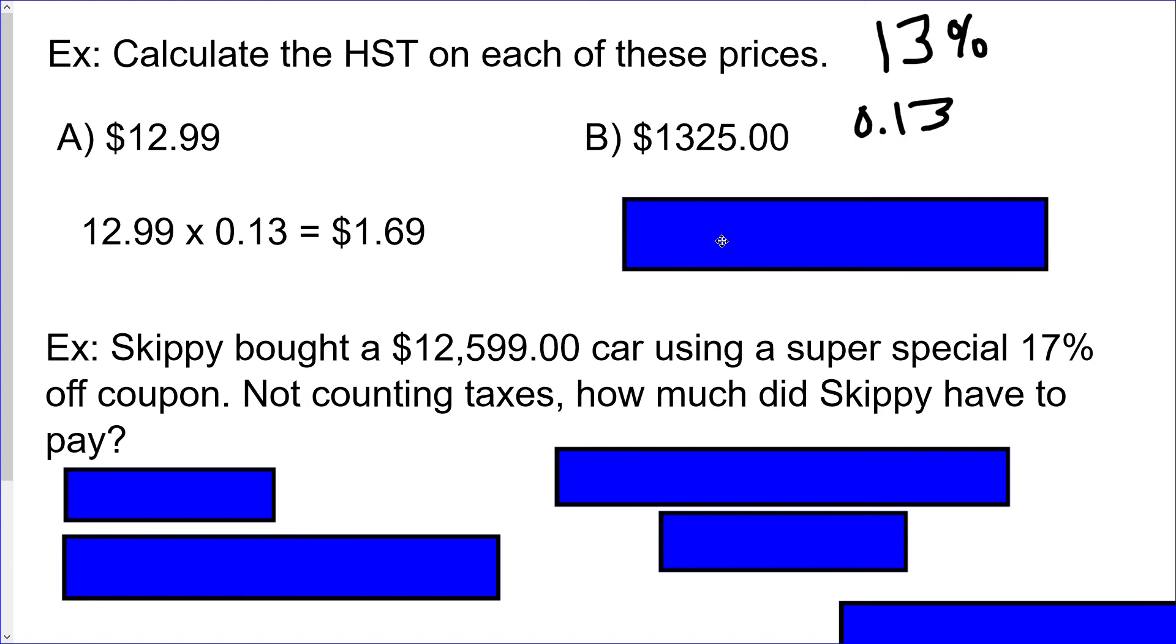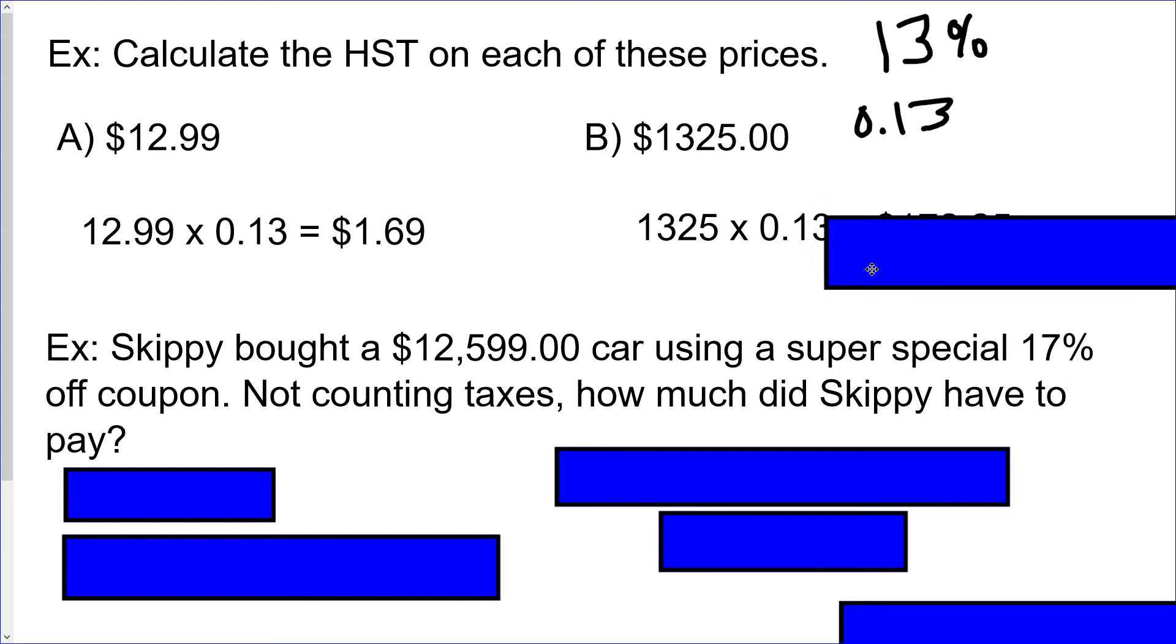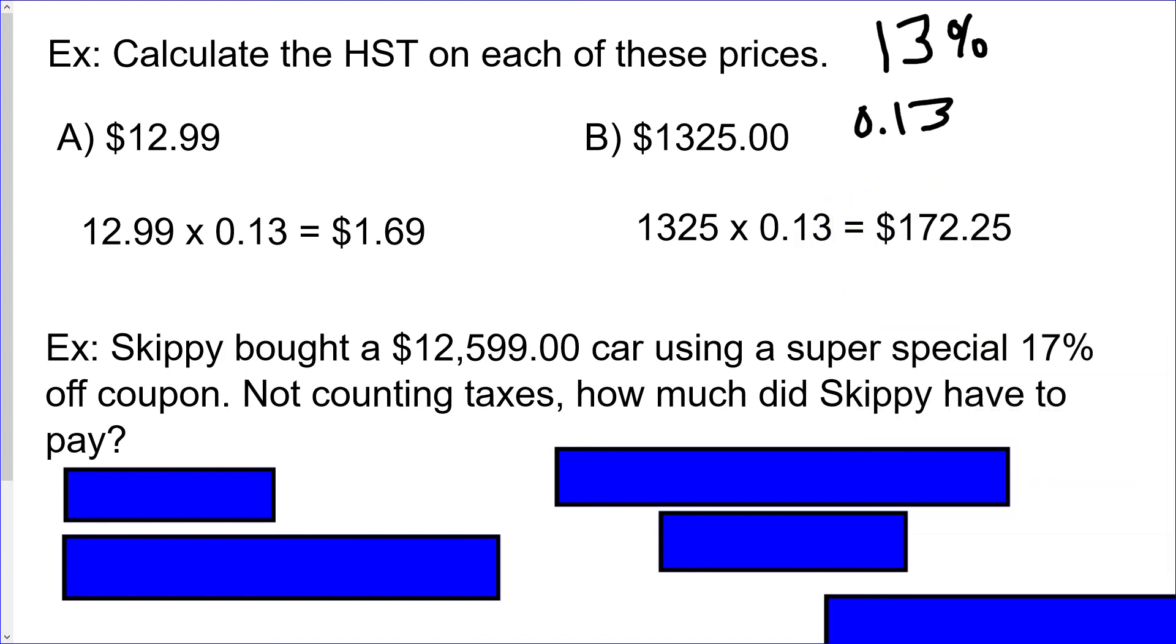Alright, so our first step again, so 1325 times 0.13, and the answer should be $172.25. You don't need the dollar sign when you're sort of writing your numbers down to calculate, but I would like you to put it in at the end. It's good form. It makes it clear that your answer is still in dollars and that kind of thing. So on we go down our slide here.